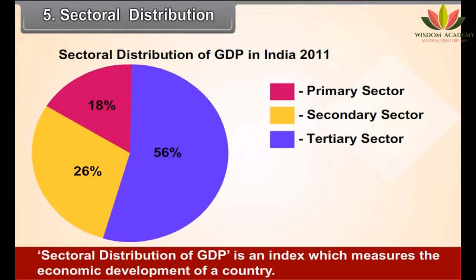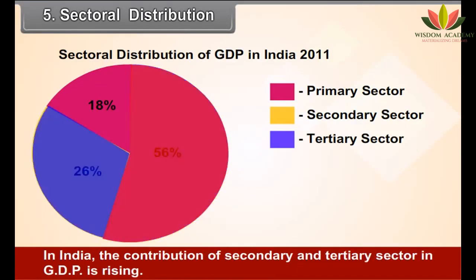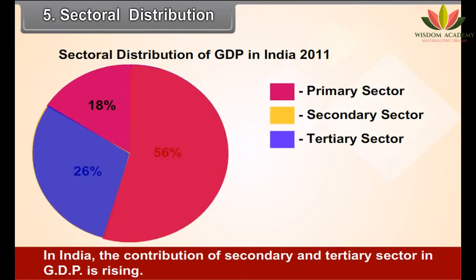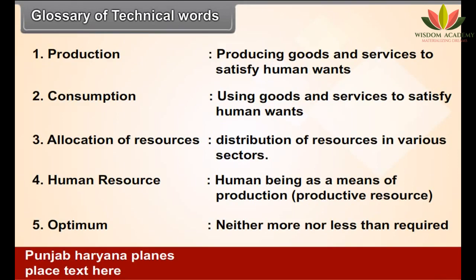Sectorial Distribution of GDP in India 2011. Sectorial distribution of GDP is an index which measures the economic development of a country. In India, the contribution of the secondary and tertiary sector in GDP is rising, indicating an increase in India's economic development.